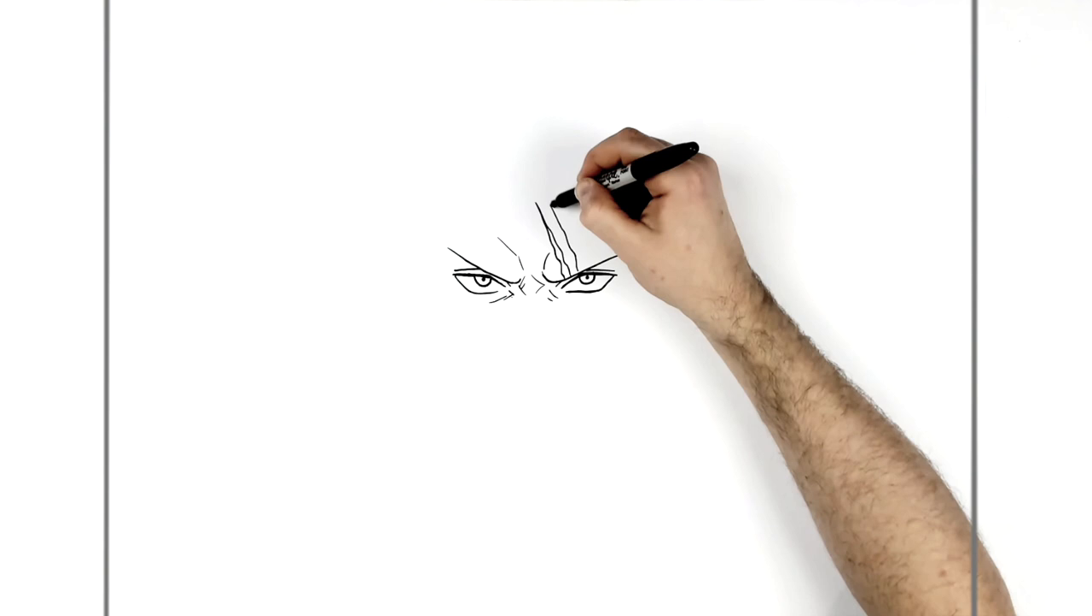So Shanks has these scars that come around his eye, so we might as well draw those. This bumpy sort of line that comes up to a sharp point just there. Then this will go down, bump around, and we do two more of those. Then coming down from his bottom eyelid as well, like so.